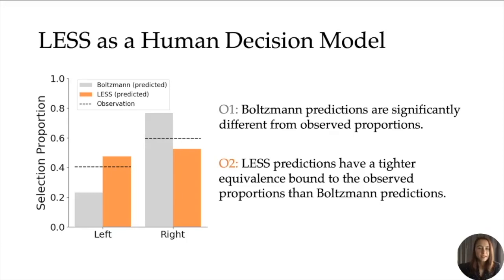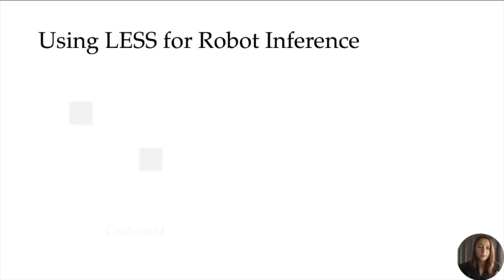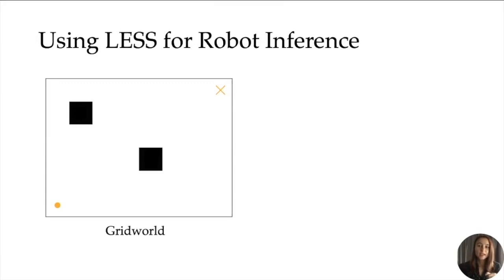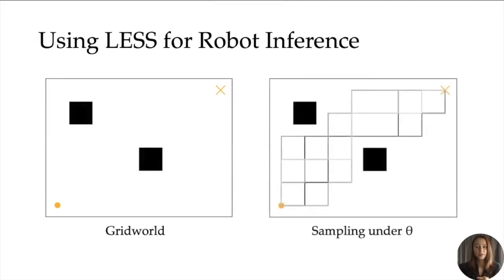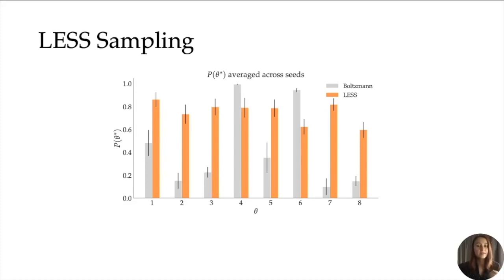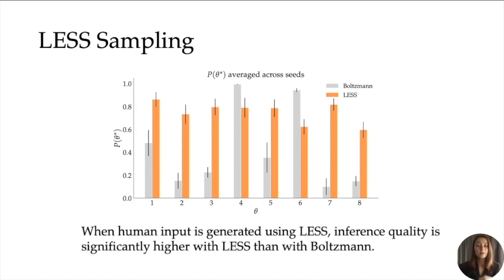Now, if people do act more like LESS than Boltzmann, how much does this impact the robot's reward inference when using this model? We use the same grid world described previously, and we simulated sampled human demonstrations according to eight different preferences theta. We see that when the person behaves according to LESS, inference quality is significantly higher with LESS than with Boltzmann. This plot suggests that if people are LESS, then it's important to model them as LESS.